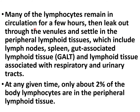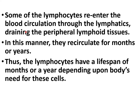Many lymphocytes remain in circulation for a few hours, then leak out through venules and settle in peripheral lymphoid tissue, including lymph nodes, spleen, gut-associated lymphoid tissue, and lymphoid tissue associated with respiratory and urinary tracts. At any given time, only about 2% of body lymphocytes are in peripheral lymphoid tissue. Some re-enter blood circulation through lymphatics, recirculating for months or years. Lymphocytes have a lifespan of months or years depending on the body's need.